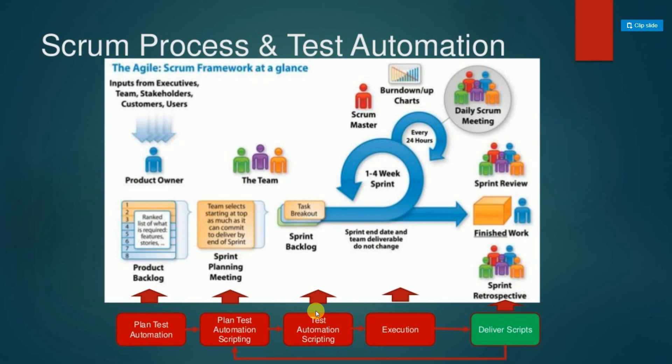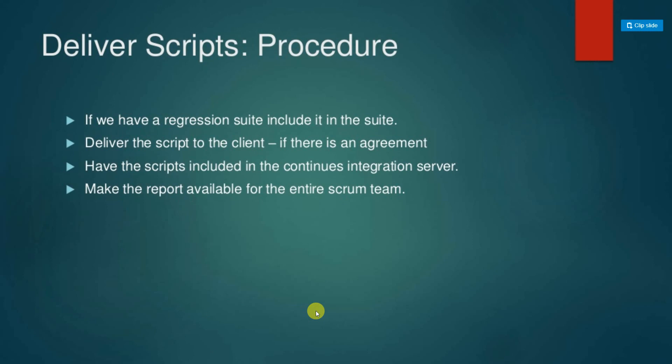When delivering scripts, include them in the regression suite deployed in the continuous integration server. If there is an agreement with the client to deliver the scripts, provide necessary documentation — a usage guide, standards, and specifications on the test automation suite. Integrate scripts to the CI server and make reports available to the entire scrum team or the client via online dashboards.